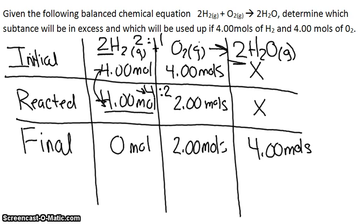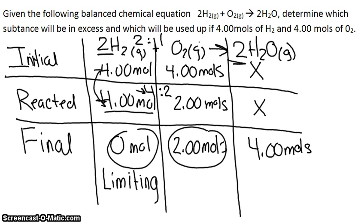So now to determine the limiting reagent and the excess reagent, we just look at our answer. So we have 0 moles of H2 and 2.00 moles of O2 gas. So that means that our H2 is the limiting reagent because it ran out. We got to 0 moles of H2 before we got to 0 moles of O2. And there are 2 moles of O2 left over, which means O2 is our excess reagent. Hopefully that helped you with limiting and excess reagent problems.